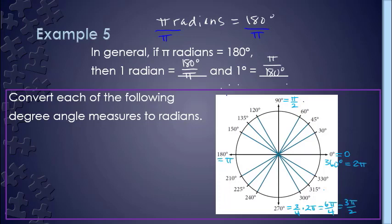Or 3 pi over 2. Maybe an easier way to think of that is that 270 degrees represents one and a half pies, and one and a half is three halves.